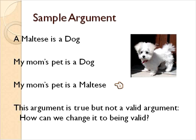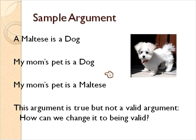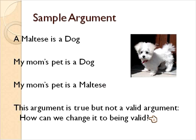Now, this argument is not valid. It might not be valid, but it's true — my mom's dog really is a Maltese, so the argument happens to be true and we're making a true statement. But the argument is not sound, because it doesn't say that all dogs are Maltese. It's just saying that a Maltese is a dog, and my mom's pet is a dog, therefore my mom's pet is a Maltese. That's kind of a bad argument.